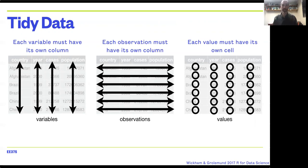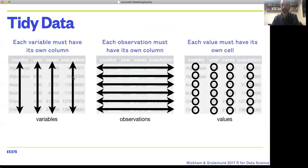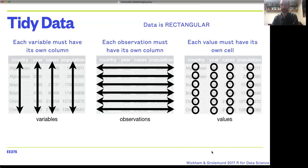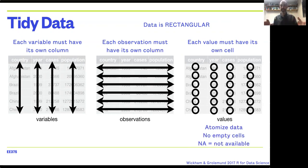Each observation has its own column, and then each value has its own cell. That gives us this overall shape of data that is rectangular—this row by column tabular format. That idea that each value has its own cell comes back to something we talked about in the last lecture, the need to atomize data—not putting multiple pieces of information in one column.